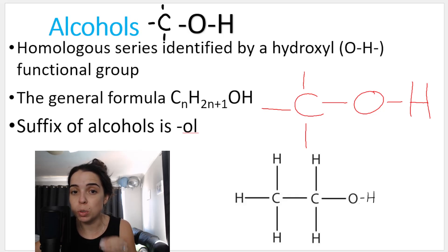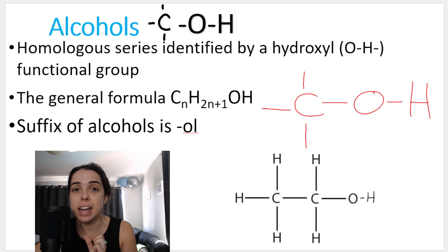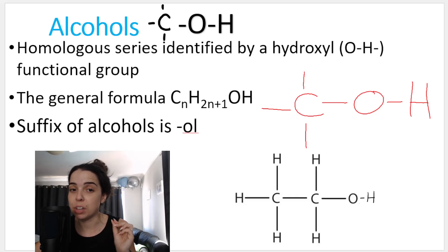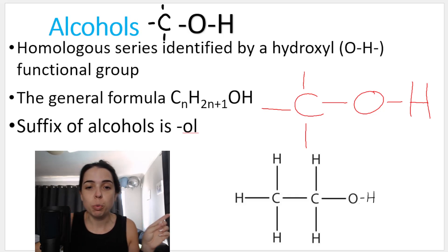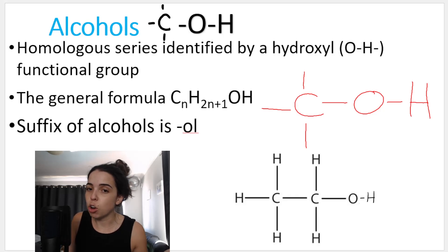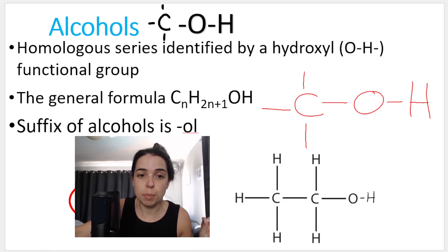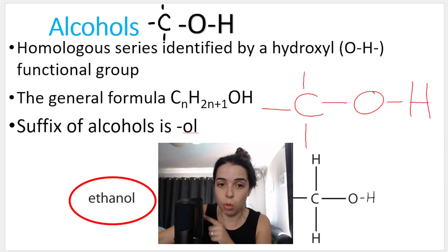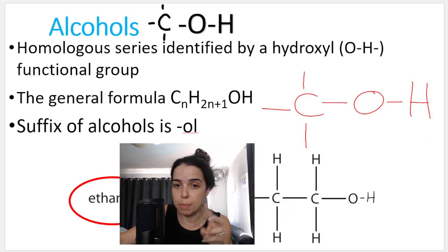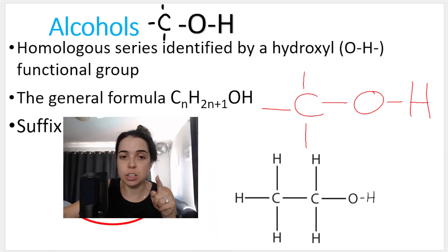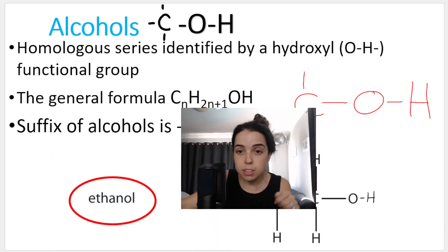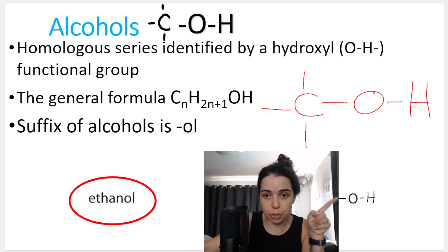The suffix of alcohols is OL. So when you see the IUPAC name of a compound and it ends in OL, you know you are dealing with an alcohol. Over here we can see an organic compound with two carbons, and the name of this is ethanol — eth because two carbons in the main chain, and it ends in OL because of the hydroxyl group, the OH.